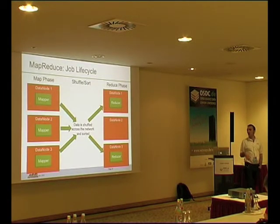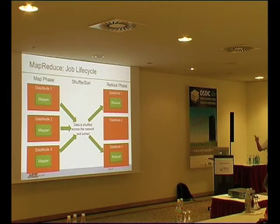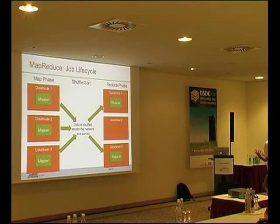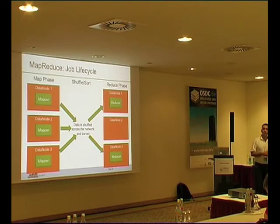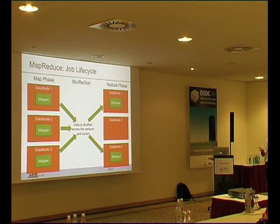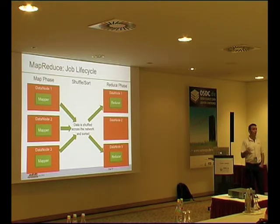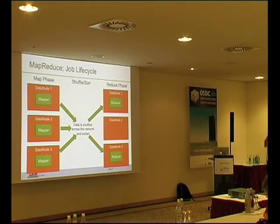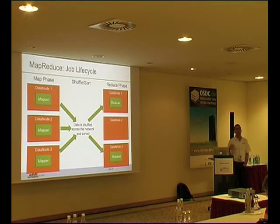The MapReduce phases are: first the mapper phase, then the shuffle, then the reducer. Be careful — the shuffle phase is very network intensive. For HA, people sometimes put one rack in data center one and another in data center two, thinking that's great for availability. That kind of works until you have a large amount of data and the shuffle floods the pipe connecting the two data centers. The advice for now is: don't do it.